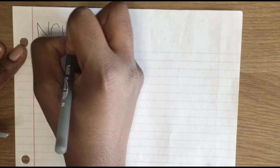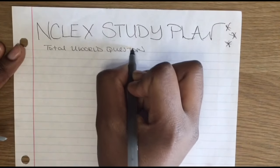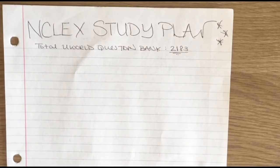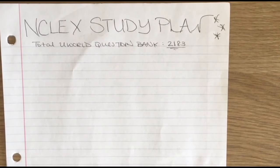You're going to use the black pen first and on the top of the paper you're going to write NCLEX study plan. If you're using a resource that has a closed bank, you want to make sure that you write down the total number of questions you have to get through. I use Uworld and there were 2,183 questions.